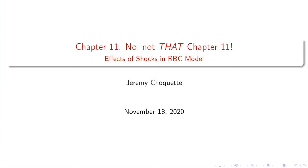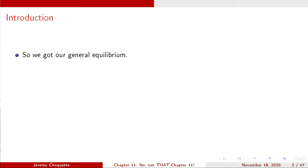Before that, we learned about the static responses to shocks in the real business cycle model — the production function shifting up, the aggregate supply curve shifting out, and a labor demand shock. Just because that stuff is static doesn't mean we can't get dynamic implications from it. We're going to marry those two things: what the static responses suggest and whether the dynamic responses using real world data allow us to test whether the theoretical predictions line up.